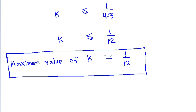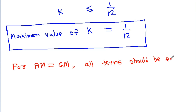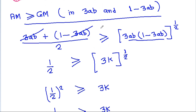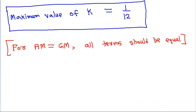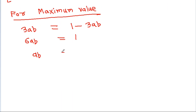We can also verify this. We know that for AM equal to GM, the two terms must be equal. So for the maximum value, we need 3ab equal to 1 minus 3ab. This gives 6ab equals 1, so ab equals 1/6.